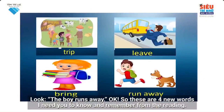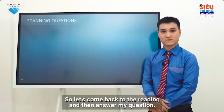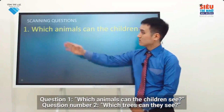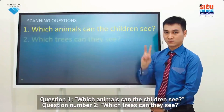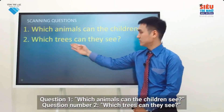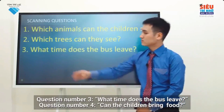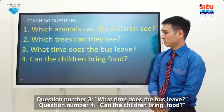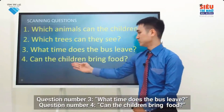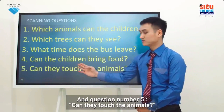Now let's come back to the reading and answer the questions. Question one: which animals can the children see? Question two: which trees can they see? Question three: what time does the bus leave? Question four: can the children bring food? And question five: can they touch the animals?